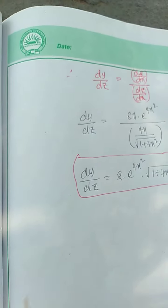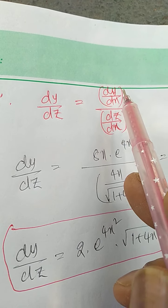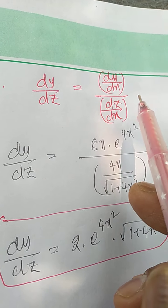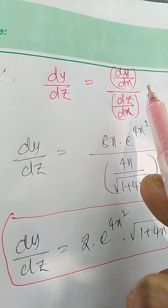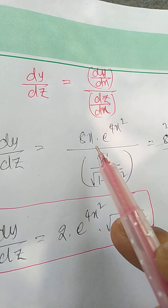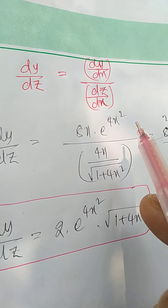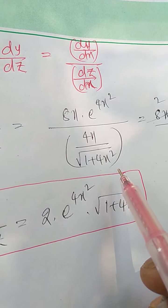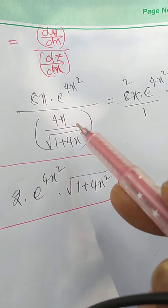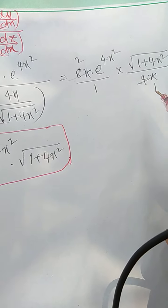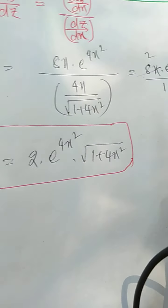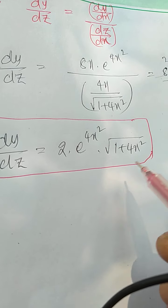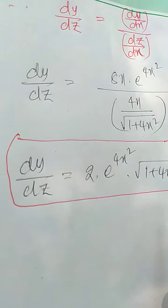Apply the formula: dy/dz = dy/dx divided by dz/dx. This is the differentiation of one function with respect to another function. Therefore, dy/dz = [8x · e^(4x²)] divided by [4x / √(1 + 4x²)]. The denominator can be rewritten as √(1 + 4x²) divided by 4x. Cancelling 4x, therefore dy/dz = 2 · e^(4x²) · √(1 + 4x²). This is the required solution.